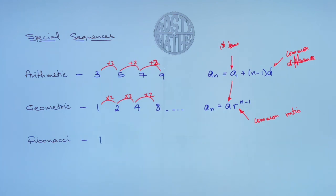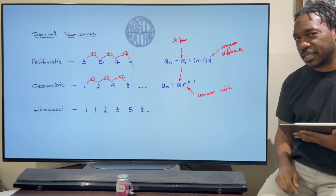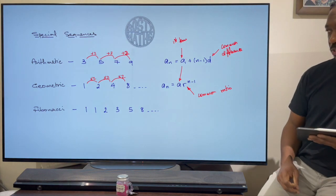The first term is 1, the second term is still 1, the third term will be 2, the next term will be 3 and then 5 and then 8 and so on. Can you spot what's happening in this sequence? Well let me point it out for you.